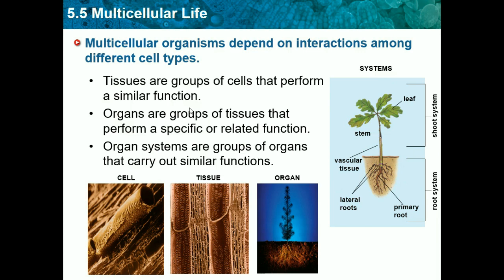Let's go through this with an example using the heart. We have heart cells, and heart cells form heart tissues, and these tissues form the heart, which is the organ. The heart is involved with multiple organ systems because it's like the center of everything. One is the cardiovascular system, which pumps blood through the body. That organ system is inside us — we're the organism that contains the organ system.